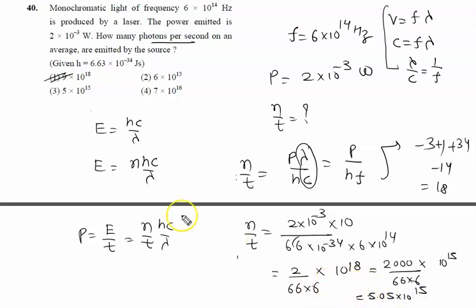So if you go for the options, option C is approximately the perfectly right answer. The right answer of this problem is option 3, that is 5×10^15.